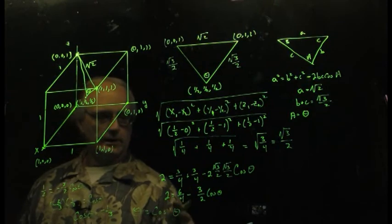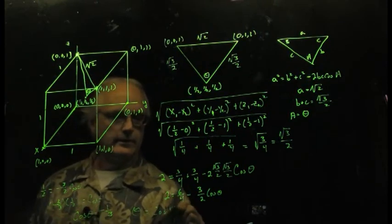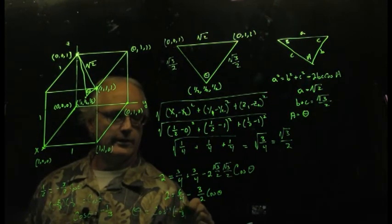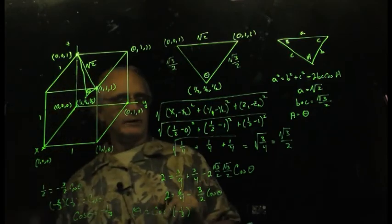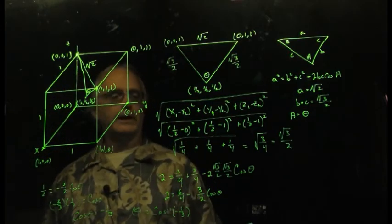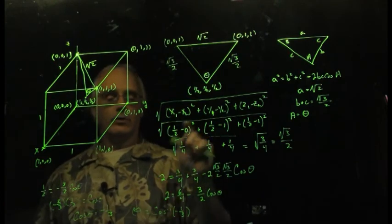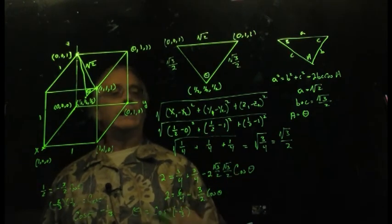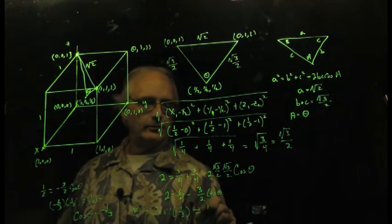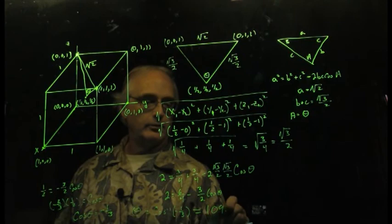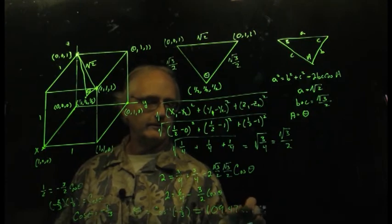Thus theta is the inverse cosine of negative one third, and it's one of the most gratifying moments in thinking about this stuff. When you punch that out on your calculator, you put in negative one third or negative 0.333 and hit your inverse cosine button, and what should pop out in the calculator is about 109.47 something degrees.